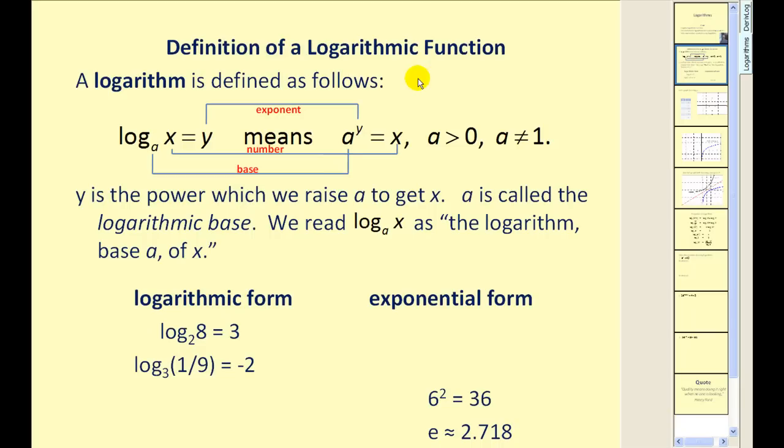A logarithm is defined as follows: log base a of x equals y means a to the y equals x, where a is greater than zero and a is not equal to one. Y is the power which we raise a to get x. A is called the logarithmic base. It's important that we realize the three major components of a logarithmic equation. This little number down here is called the base, so when we rewrite this in exponential form, a will be the base. A logarithm is an exponent, so what the log is equal to ends up being our exponent. And the value of x here in the log will be the number of what it's equal to in exponential form.